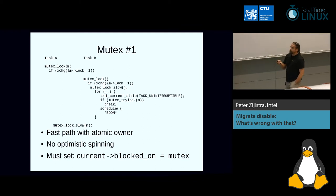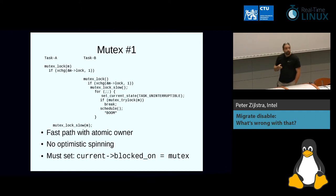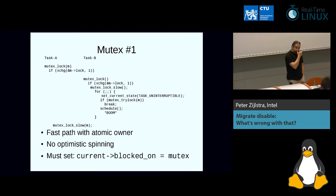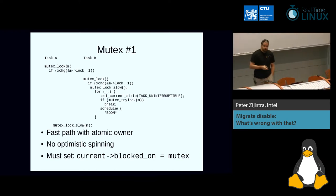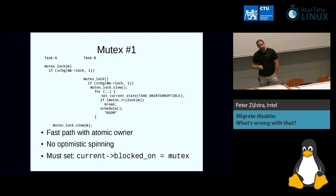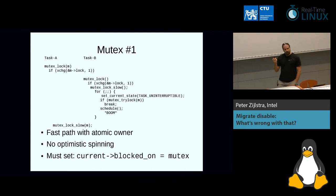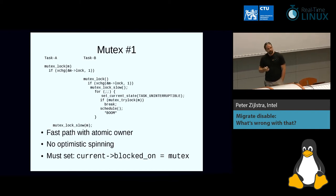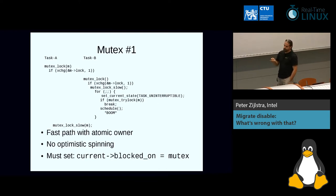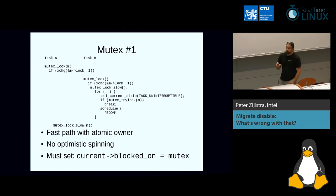It must set the blocked_on relation, otherwise there is nothing to follow. Optimistic spinning works because the owner is running, so technically you don't need to boost it because it's on the CPU already. But on SMP it gets tricky. It got very tricky to make this work, so I killed it. But we can look at adding some of it back in later if we get this working.